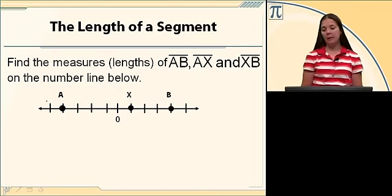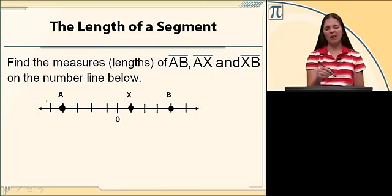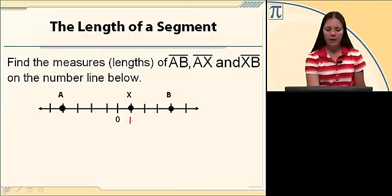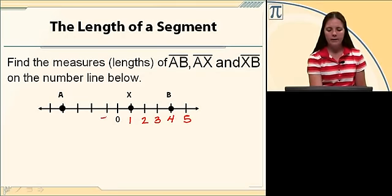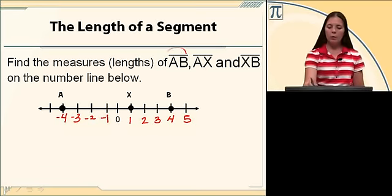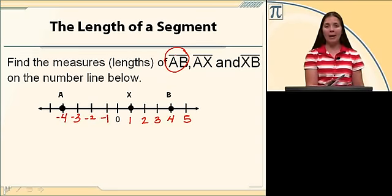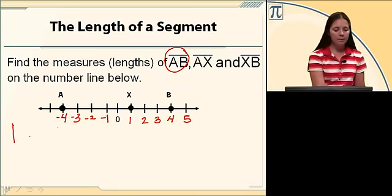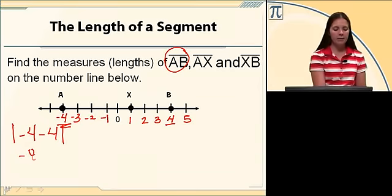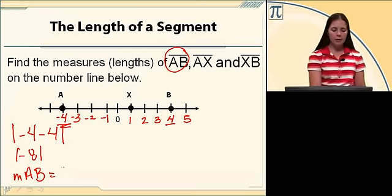Let's find the measures of segment AB, segment AX, and XB on the number line. I'm going to start by numbering my number line. It looks like B is at four, and A is at negative four. To find the distance between A and B, I find the absolute value of negative four minus four. Negative four minus four is negative eight, so the measure of AB is the absolute value of negative eight, which is eight.